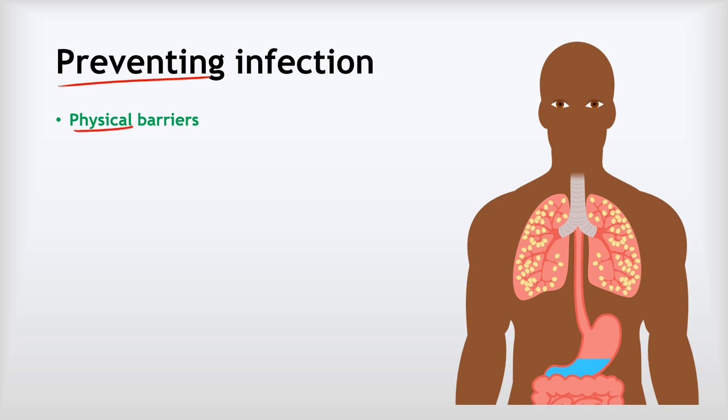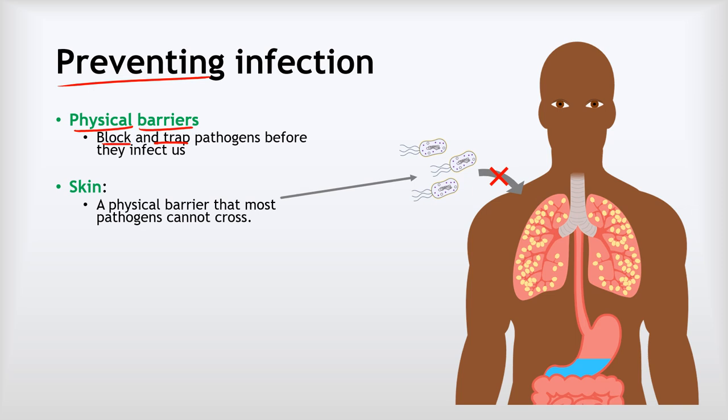Physical barriers block and/or trap pathogens before they're able to infect us. There are three that we need to know about. Our first physical barrier — the biggest and most important one — is our skin. Our skin covers our entire body and forms a physical barrier that most pathogens cannot cross.